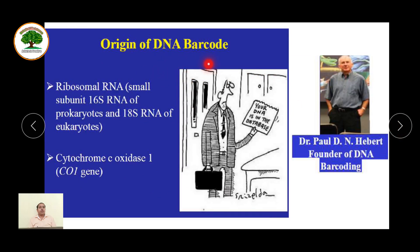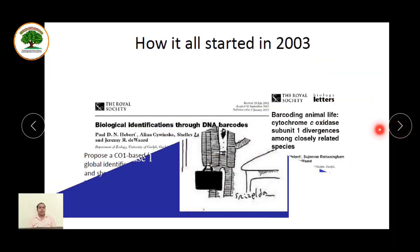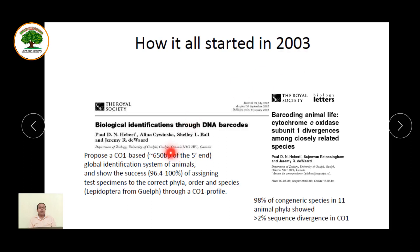The DNA barcoding process was originated by scientist Dr. Paul D.N. Herbert, the founder of DNA barcoding. He took the idea from ribosomal RNA — the smaller subunit: 16S rRNA of prokaryotes and 18S rRNA of eukaryotes — used for species identification. He also used the cytochrome c oxidase 1 (CO1) gene present in animal cells in the electron transport chain. It all started in 2003 when Herbert published his paper 'Biological Identification through DNA Barcodes.'